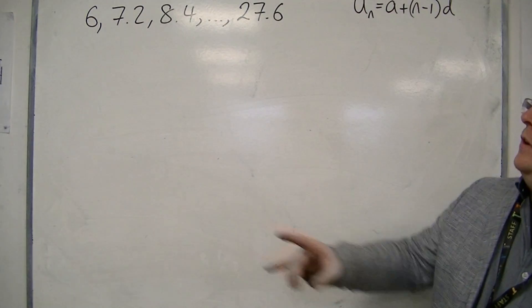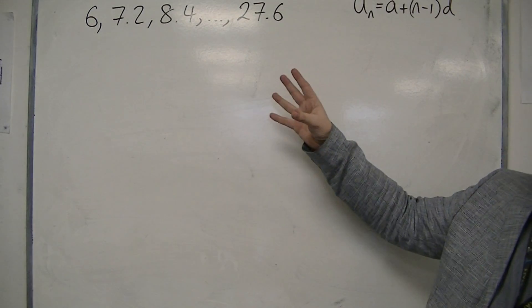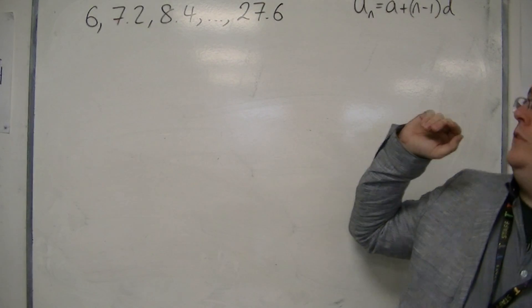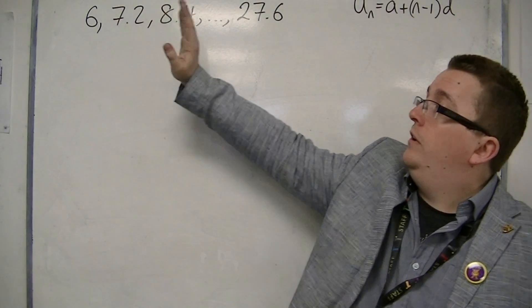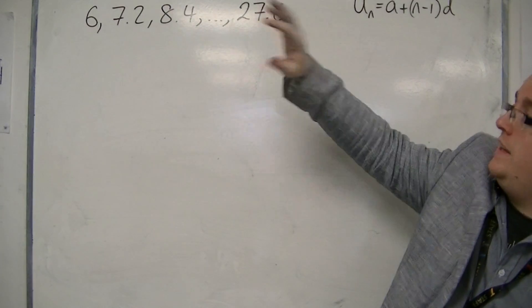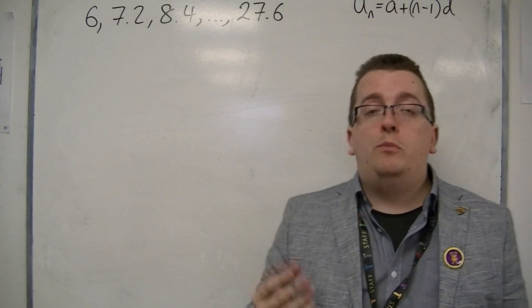One of them could be looking like this. We have an arithmetic sequence and I have some of the terms at the start: 6, 7.2, 8.4, and it continues all the way up to 27.6.